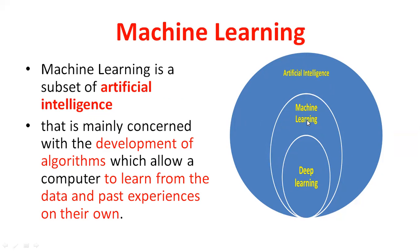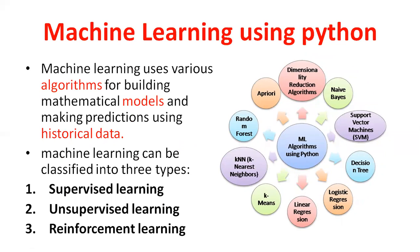Machine learning uses various algorithms for building models and making predictions using historical data. Different algorithms include logistic regression, decision tree, support vector machine, Naive Bayes classification, Apriori algorithm, random forest, and K-nearest neighbor. These machine learning algorithms are categorized into three types.